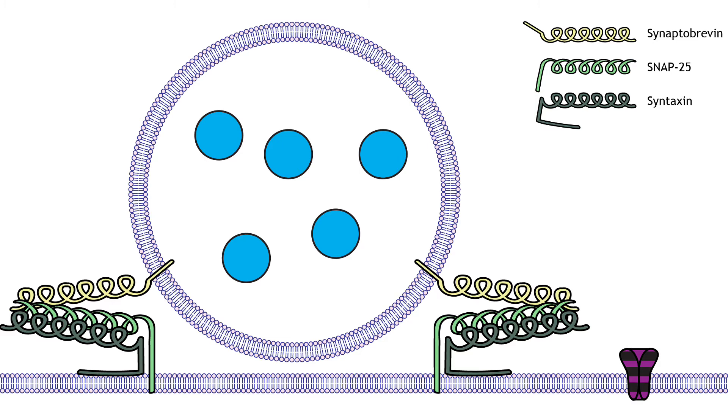Syntaxin and SNAP-25 are called T-SNAREs because they are located on the terminal membrane, which is the target membrane. The interaction of these three proteins leads to vesicle docking at the active zone.